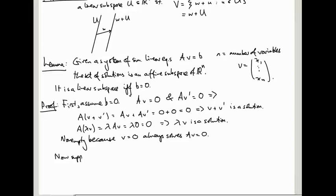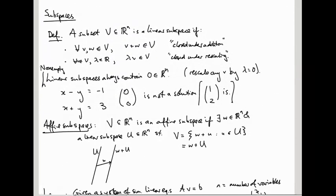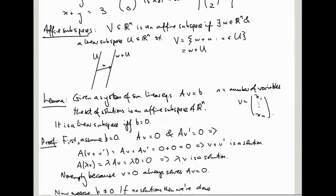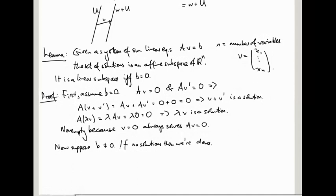Now, suppose that B is not 0. So two things can happen. Either there's no solutions, and if there's no solutions, then we're done, because the empty set satisfies these two conditions here. For all V and W in the empty set, their sum is also in the empty set, because there's nothing to check, and similarly for the rescaling. So if there's no solutions, we're done.